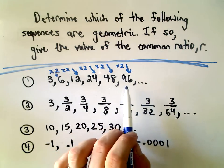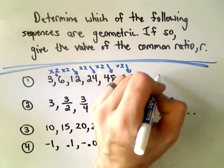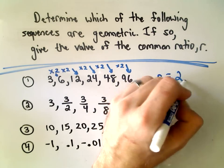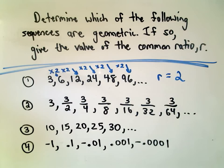So assuming this pattern continues, we would say yes, this is a geometric sequence. And we say the R value is going to be equal to simply the number 2. So the common ratio of this geometric sequence is 2, because that's what we're multiplying by each time to get to the next number.